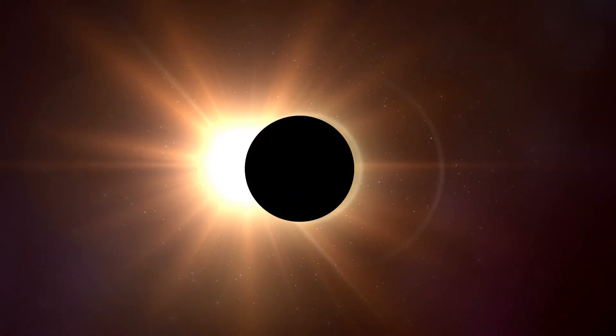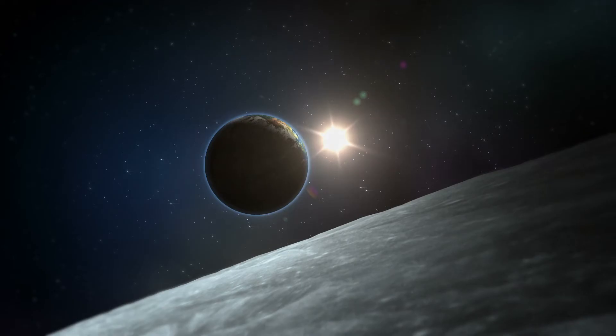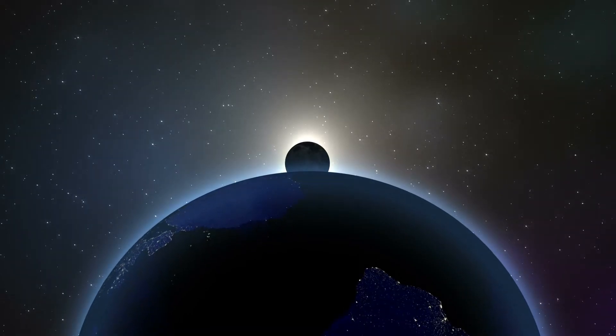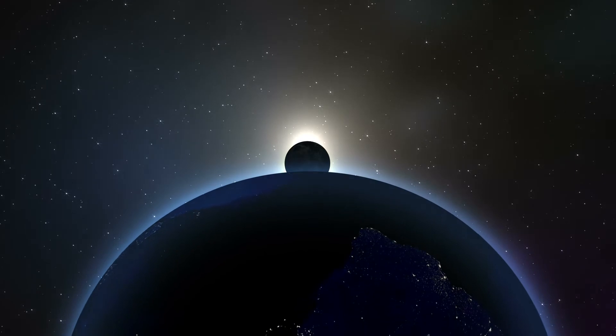12. The beautiful symmetry of a total solar eclipse happens because, by pure chance, the Sun is 400 times larger than the Moon, but it is also 400 times farther from the Earth, making the two bodies appear the exact same size in the sky.